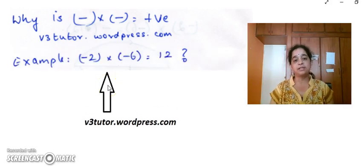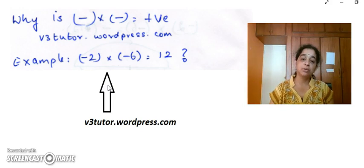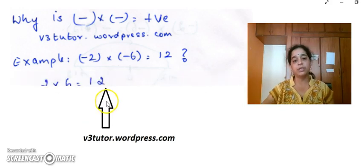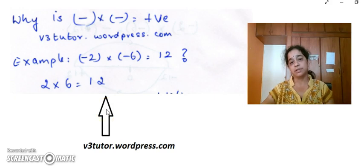I have taken an example as minus 2 into minus 6. How does it give you a plus 12? Now before we dwell into negative numbers, let us do something in positive numbers. So when we take plus 2 into 6, we get a plus 12.